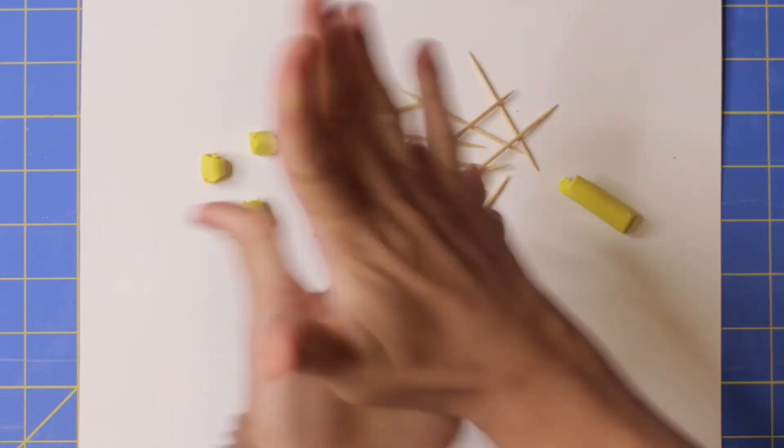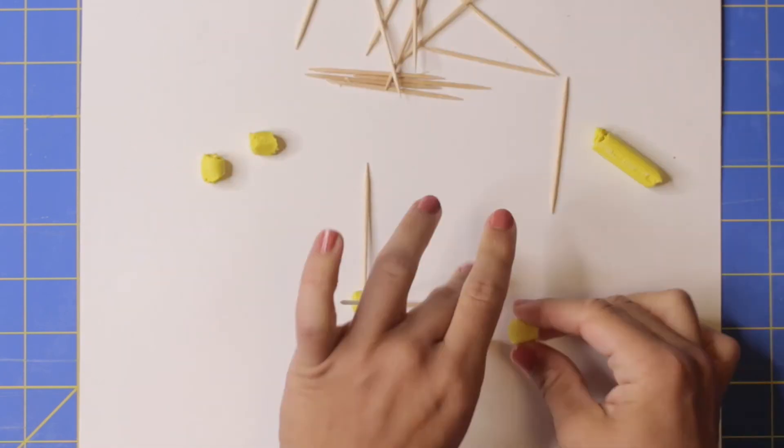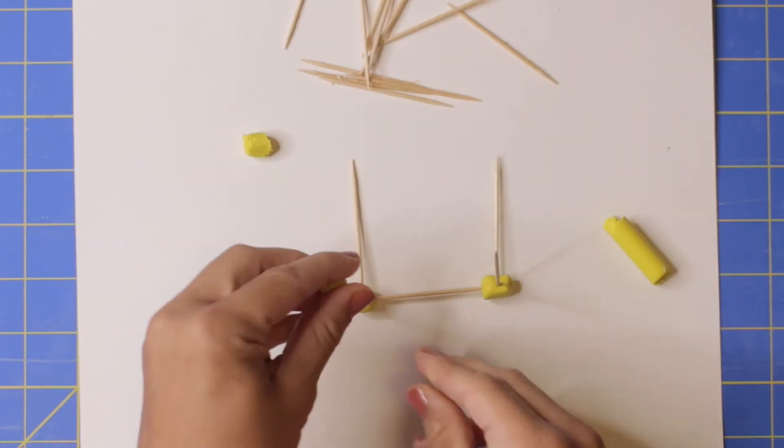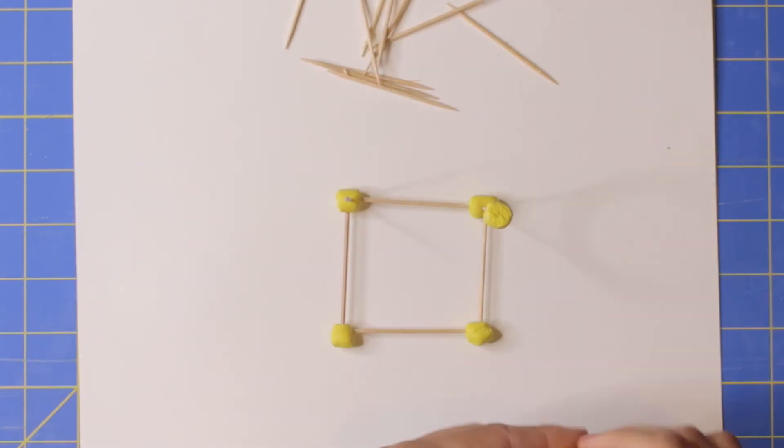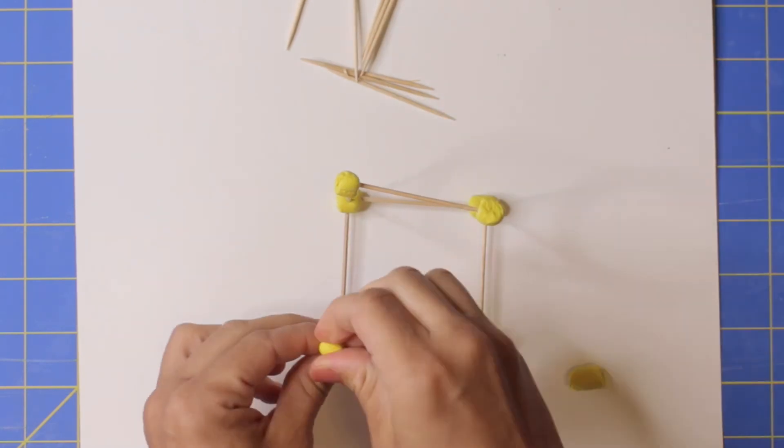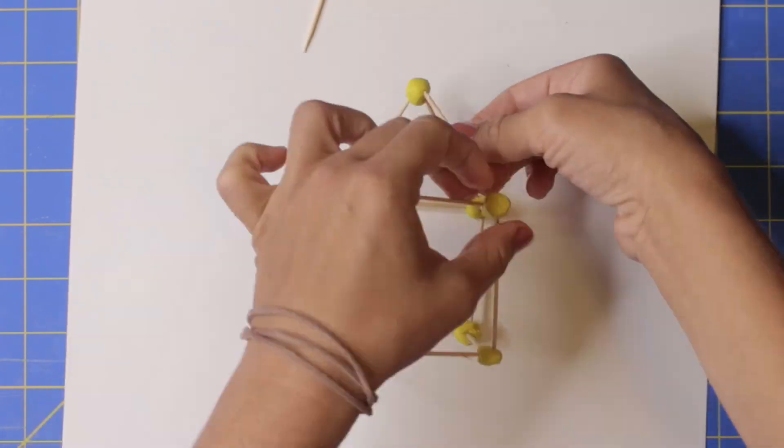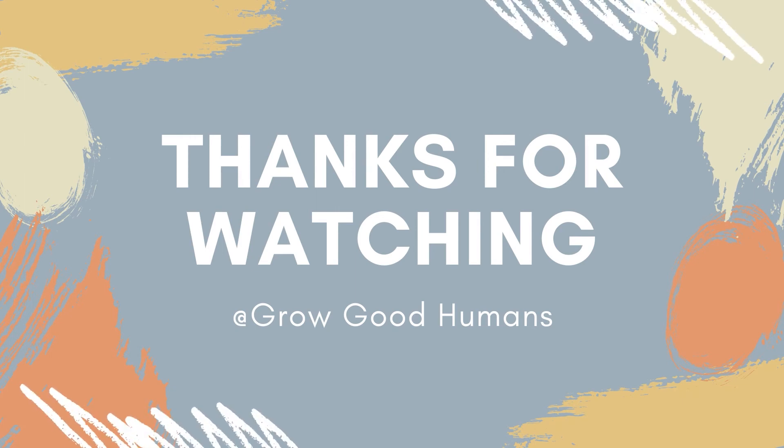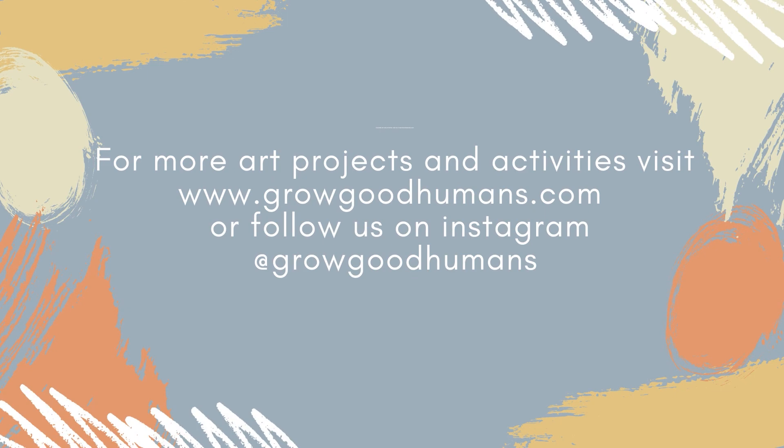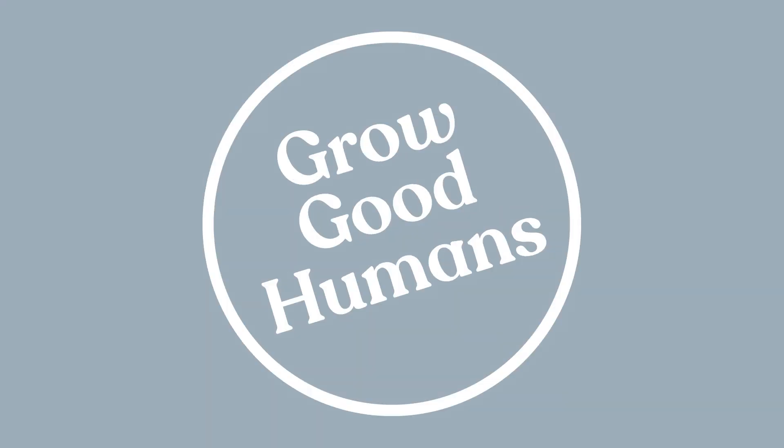Take your clay and roll it into several balls that are about the same size. I recommend making them about the size of a mini marshmallow. Stick toothpicks into the clay to construct a three-dimensional sculpture of your choice.